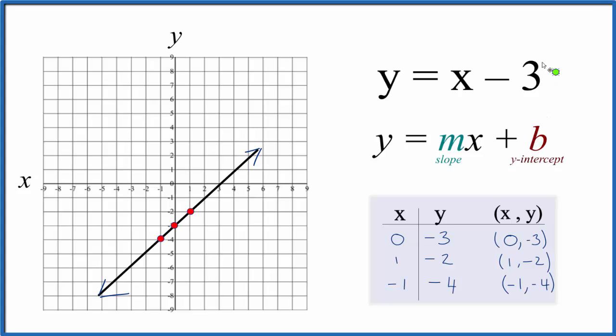b is negative 3 here. So we go down on the y-axis to minus 3, and that right there is where our line should go through. And it does.